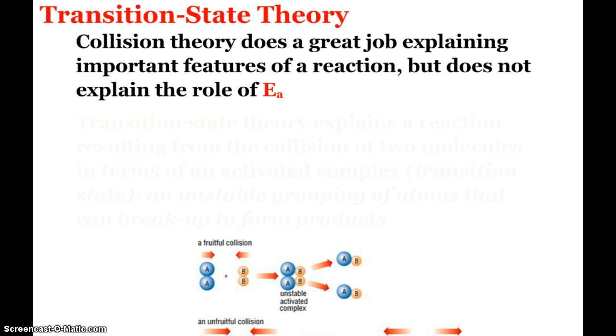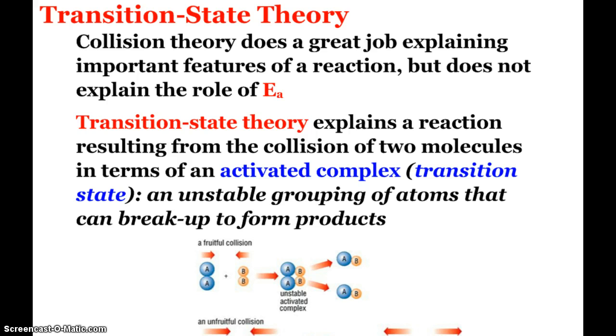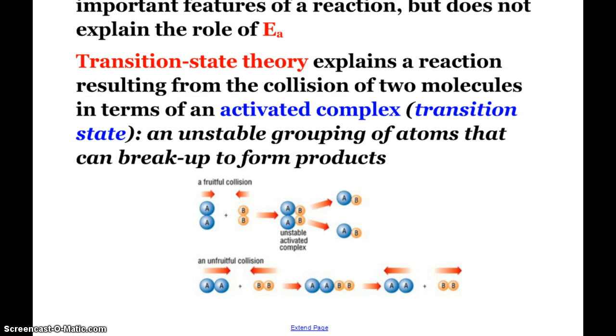Collision theory does an excellent job explaining important features of a reaction, but doesn't do a great job explaining the role of activation energy. It just says we need a minimum amount of energy. That's where transition state theory comes in. It explains a reaction resulting from the collision of two molecules in terms of an activated complex, also known as a transition state. This is an unstable grouping of atoms that can break up to form products or go back to being reactants. Here I see a fruitful collision. When A and B molecules collide, I have this activated complex, this unstable transition state. Then it may bust up and become my two products, or could go back to being reactants.